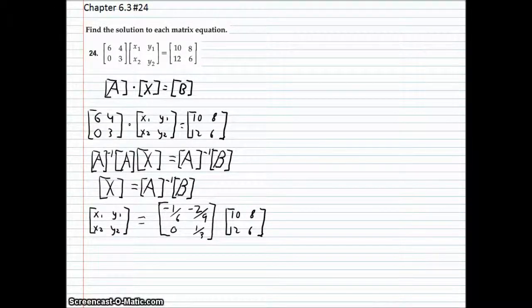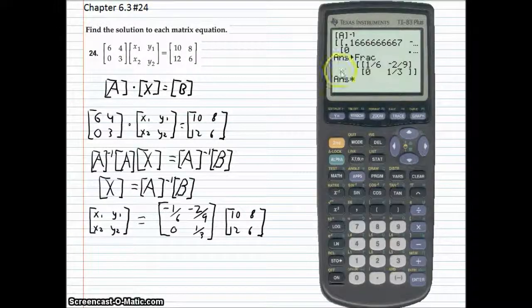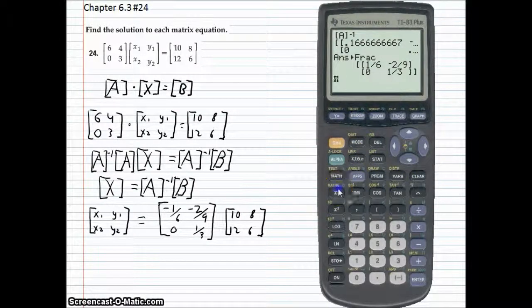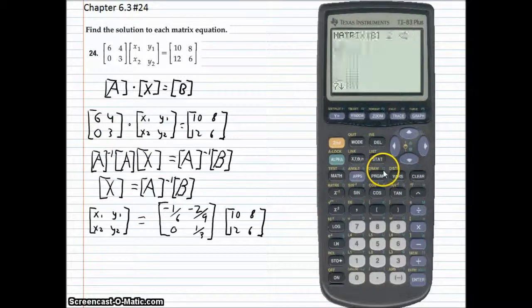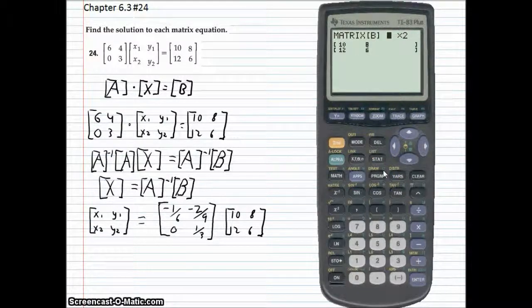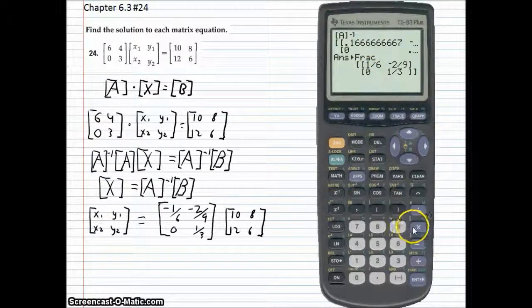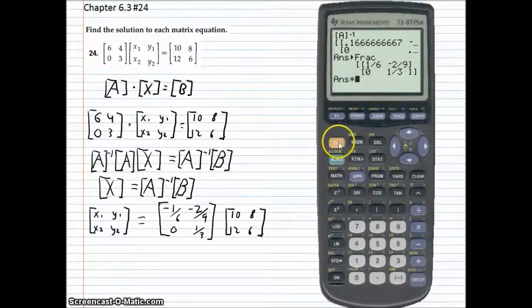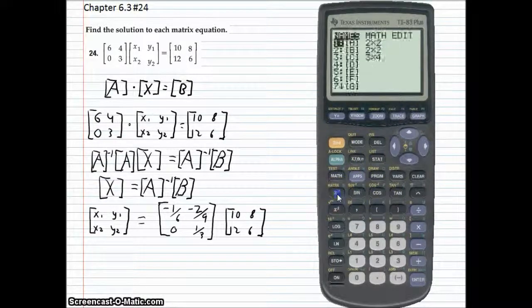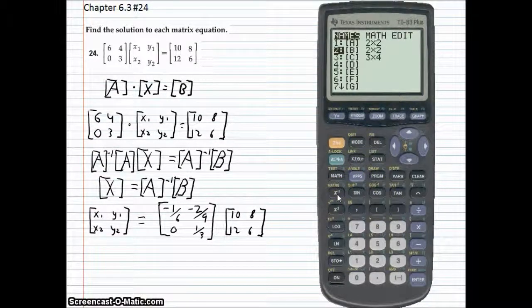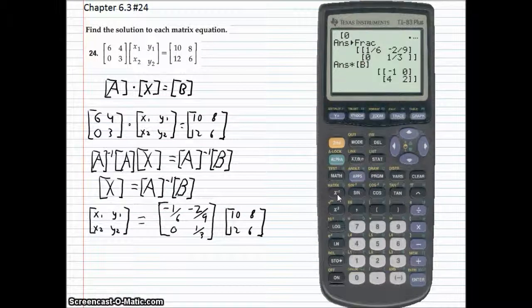Okay, now we have to go back to our calculator. Now, go to second matrix, go to B, entering your values for B, which are already done. Now, go to second mode, and since we already have that answer from before, just go with times. Now, go back to second matrix B, and you should get this.